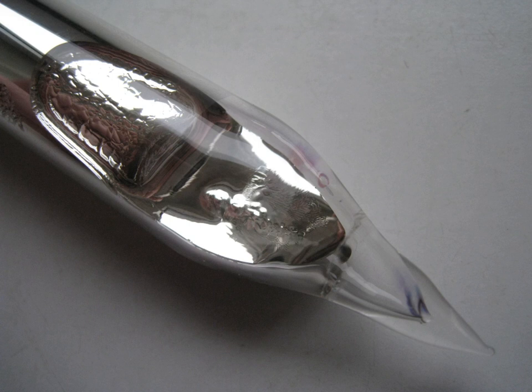Rubidium is the 23rd most abundant element in the Earth's crust, roughly as abundant as zinc and rather more common than copper. It occurs naturally in the minerals leucite, pollucite, carnalite, and zinnwaldite, which contain as much as 1% rubidium oxide. Lepidolite contains between 0.3% and 3.5% rubidium, and is the commercial source of the element. Some potassium minerals and potassium chlorides also contain the element in commercially significant quantities.